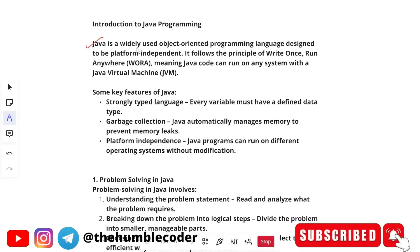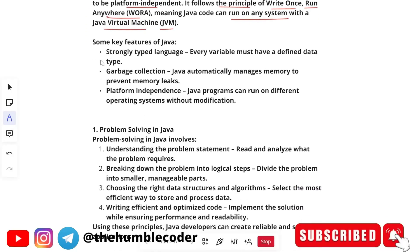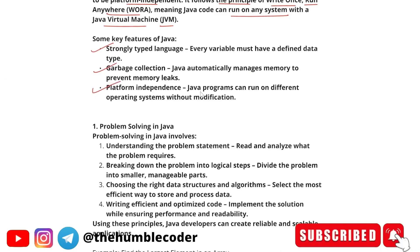Let's now start with an introduction to Java programming. Java is a widely used object-oriented programming language designed to be platform independent. It follows the principle of 'write once, run anywhere,' also called WORA, meaning Java can run on any system with the Java Virtual Machine (JVM). Key features include: strongly typed language — every variable must be defined with a data type; garbage collection — Java automatically manages memory to prevent memory leaks; and platform independence — Java programs can run on different operating systems without any modifications.